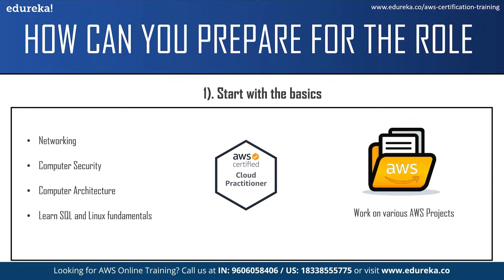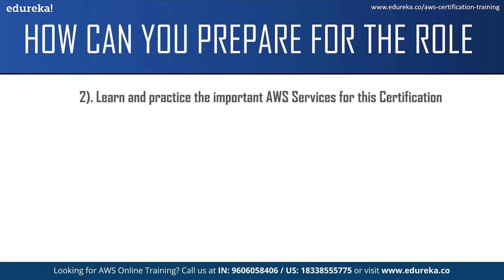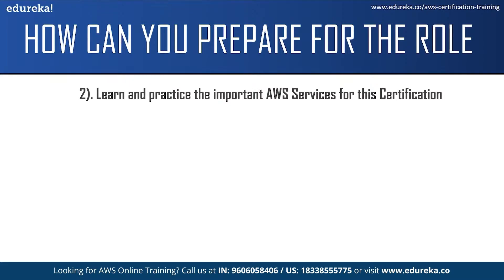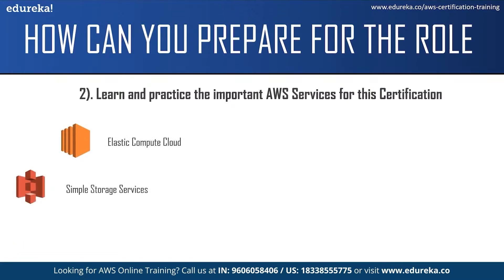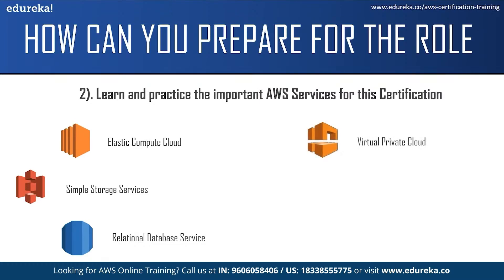The next step is working on AWS projects. You can work on projects involving different services — start with easier projects initially and then move on to more difficult ones. You can find good projects on the Amazon Web Services official website. After that, learn and practice the important AWS services for the certification. Some of the key services include Elastic Compute Cloud, Simple Storage Service, Relational Database Service, Virtual Private Cloud, Amazon Kinesis, and Amazon Lambda.